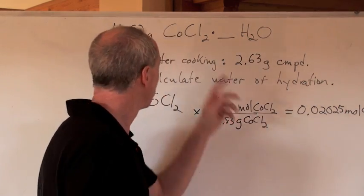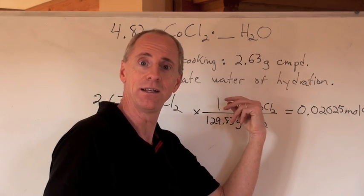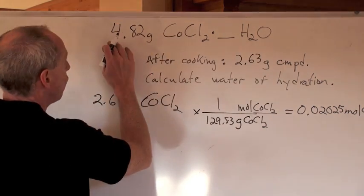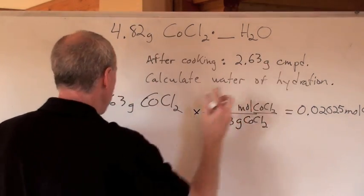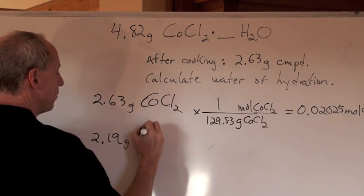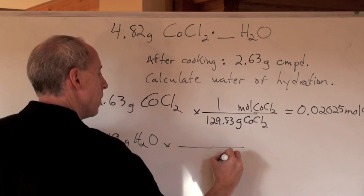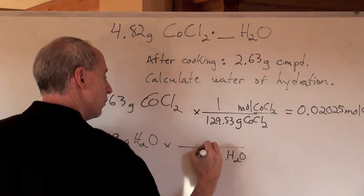What's the difference between the mass of that chemical before heating and after heating? The mass of the water that took off. So if you subtract 4.82, you subtract from that 2.63, you're going to get 2.19 grams of water.